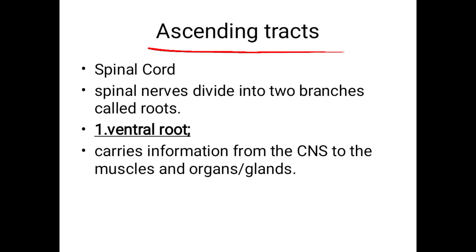The spinal cord is very important. It is an extension of the CNS — that means the brain — and forms a connection between the brain and the peripheral parts of the body. There are 31 segments of the spinal cord, divided into 8 cervical, 12 thoracic, 5 lumbar, 5 sacral, and 1 coccygeal segment.